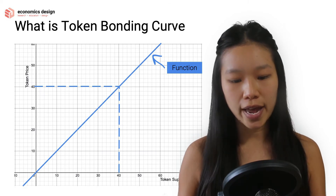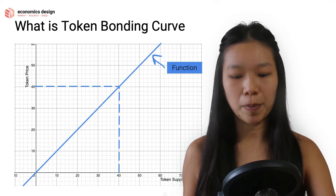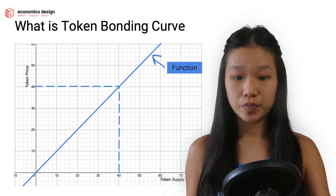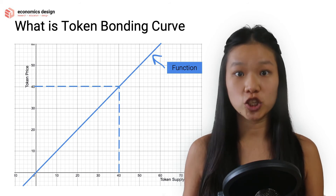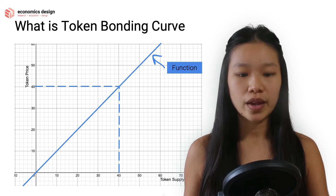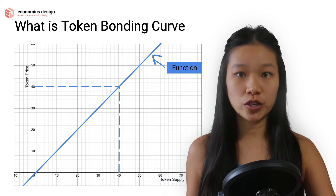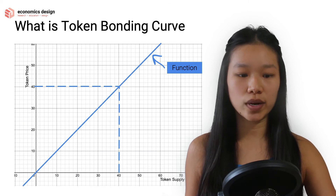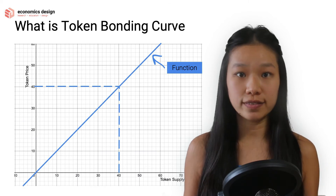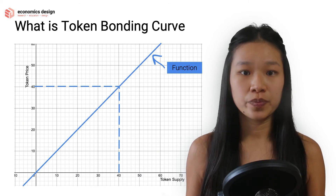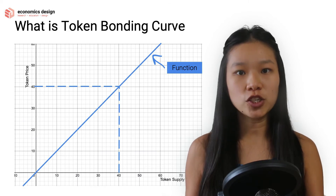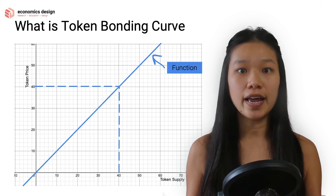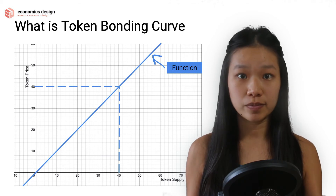So we look at a supply of 40 tokens. You draw a line up towards that function, that line, and then you correspond it to what is the y-axis at that point — what is the token price? That's 40. So this function really just ties in the relationship between the supply and the price.